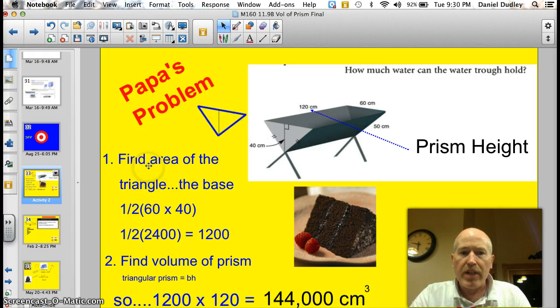So, that's the first step. Find the area of the triangle, the base. So, we use the formula, one-half base times height. So, I have one-half, 60 times 40. Well, 60 times 40, 6 times 4 is 24 and there's my two zeros, so that's 2400. So, one-half 2400. If I simplify that, that's 1200.